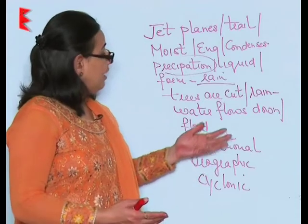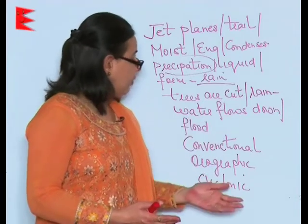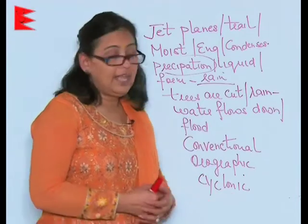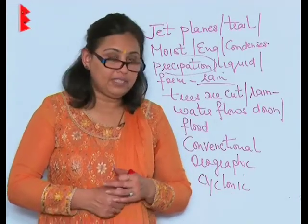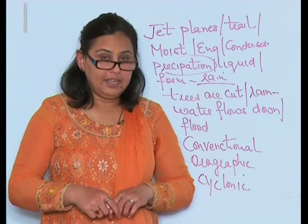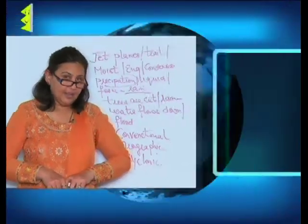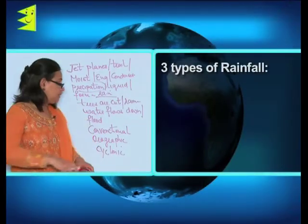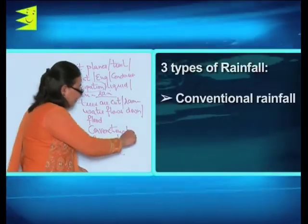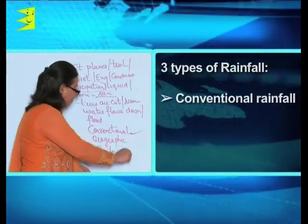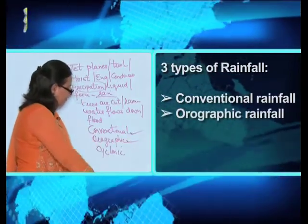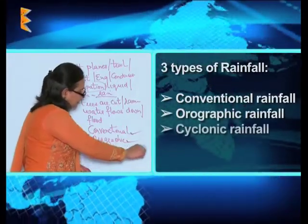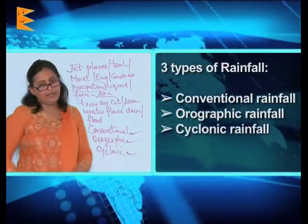You have to understand that as far as rainfall is concerned, it is of three types: the convectional rainfall, the orographic rainfall, and the cyclonic rainfall.